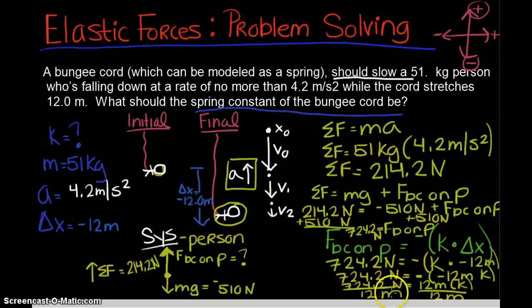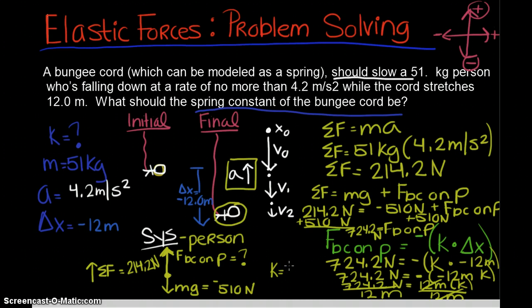So in the end, 724.2 divided by 12 meters gives you 60.35, and the units on this are just newtons divided by meters. When I look back at my problem I have two significant digits, so I have k here equal to 60 newtons per meter.